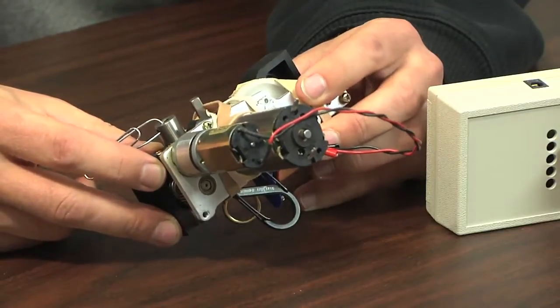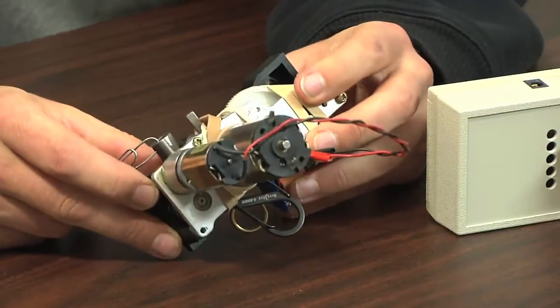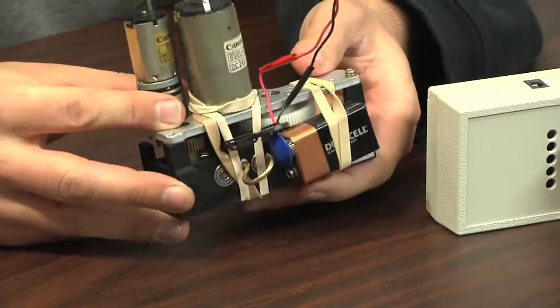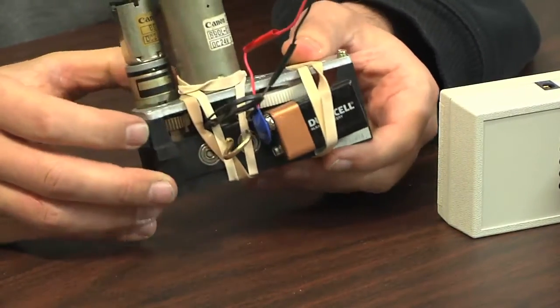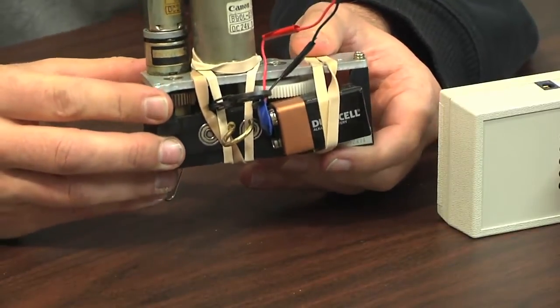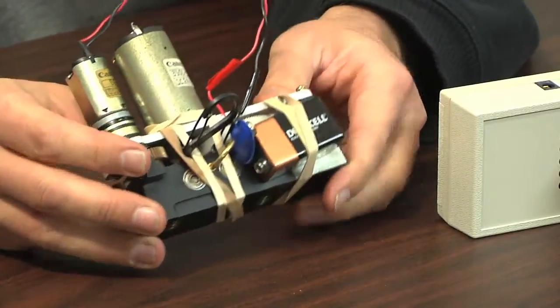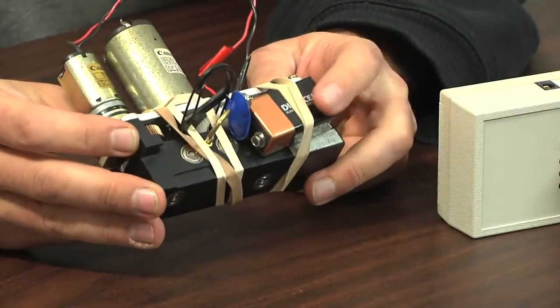essentially spins directly proportional to voltage. So for example, if you take a 24 volt motor and run it off just a 9 volt battery, it's not going to spin as fast—roughly about a third as fast. So I hooked this up to a 9 volt battery.